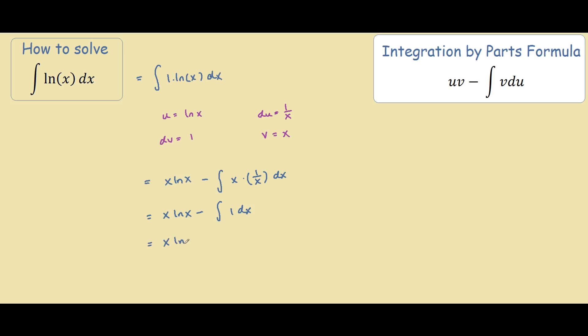So x ln of x minus the integral of 1 is x plus c. And you can choose to factor out the x so we have x bracket ln of x minus 1 plus c, and that is our answer.